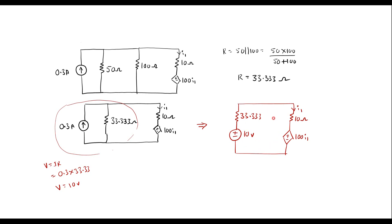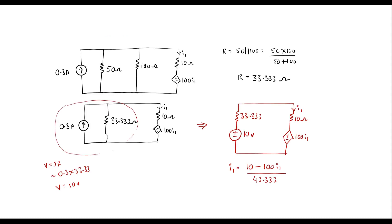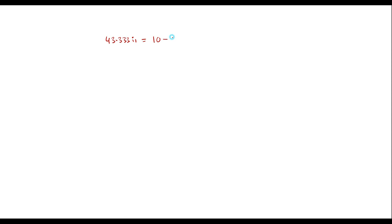Now we can observe that there is only one loop and current I1 is flowing. I1 equals voltage divided by resistance. The two voltage sources are in series with opposite polarities, so I1 = (10 − 100·I1) / 43.333. Simplifying: 43.333·I1 = 10 − 100·I1, so 143.333·I1 = 10, giving I1 = 10 / 143.333.